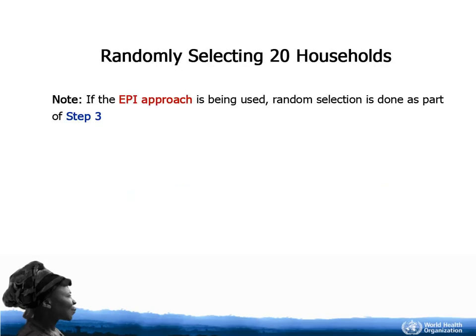Note: if you are using the EPI approach, the random selection of households is done as part of Step 3, and there is no need for additional household selection. Instead, the EPI approach should be continued until 20 households have been identified.